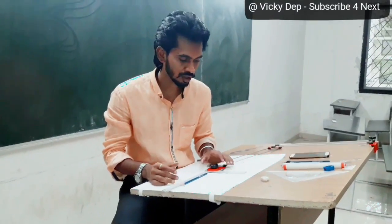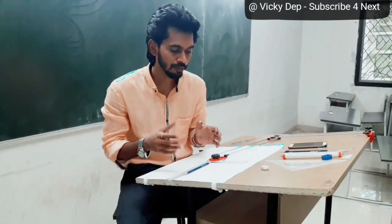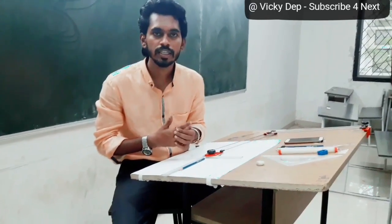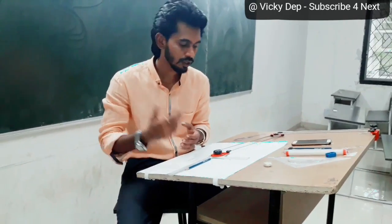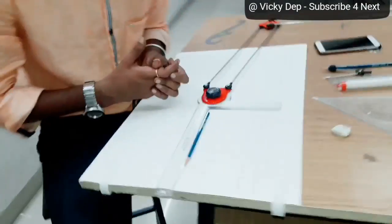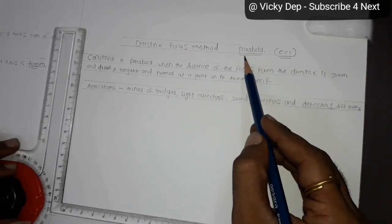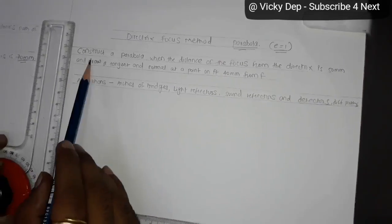Hello guys, today we are going to draw a parabola, a very important part of engineering curves. We will use today directrix focus maker. Please come closer, where eccentricity E is equal to 1 for parabola.